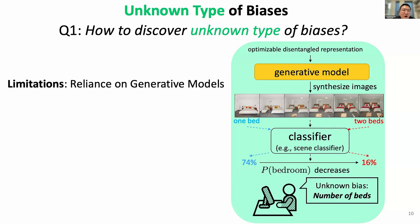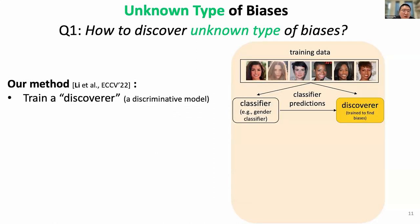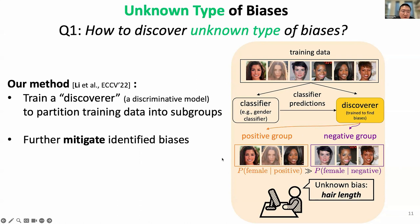There's a limitation of this work, which is overly relying on a robust generative model. So we also ask: can we identify unknown types of biases directly on the training data without a generative model? The second part of my talk covers a recent ECCV 2022 paper, where we train a discoverer network — a discriminative model that partitions the dataset into two groups based on bias types. We can then identify those biases and show them to humans. Furthermore, we propose a mitigation pipeline where, with those discovered biases, we can retrain and improve a classifier's performance so it is less biased. Everything is unsupervised.